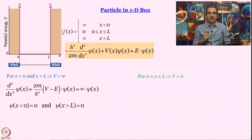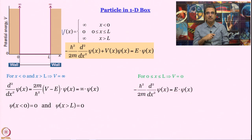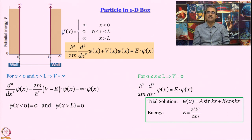For x between 0 and L, the potential is 0, so the particle behaves as a free particle. We know the Schrödinger equation for a free particle. The trial solution is ψ(x) = A·sin(kx) + B·cos(kx), and the energy is E = ℏ²k²/2m, which we already know from our discussion of the free particle.